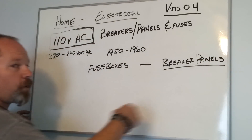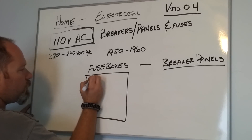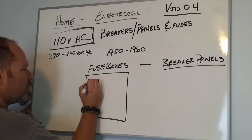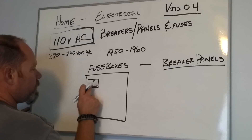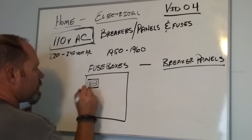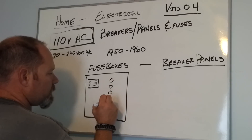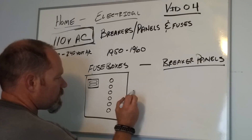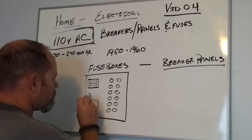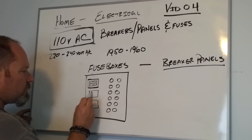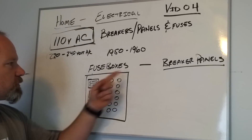In a fuse panel you'll see square boxes with a hinged handle that you pull out — behind there are cartridge fuses. The other style has screw-in fuses with the same base pattern as a light bulb. Some of these handle 220 volts and have two fuses in them; the single ones are for 110 volt circuits. Now let's move on to the breaker panel.